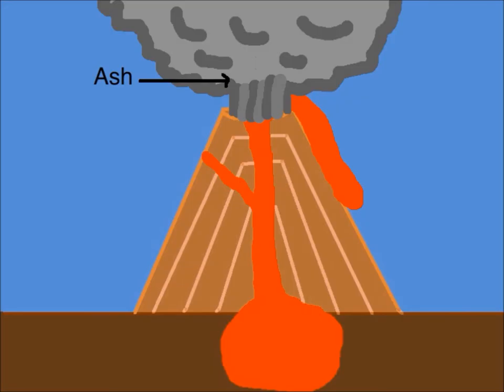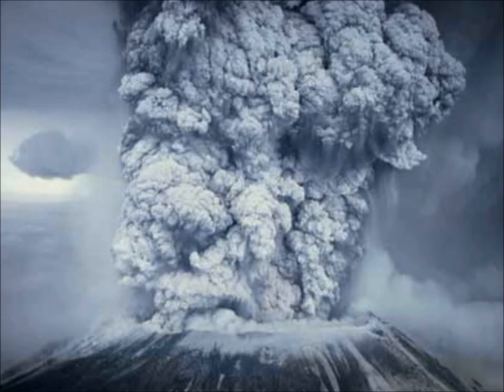Ash is very small fragments of lava and rock blasted into the air by volcanic explosions. Ash looks and feels like grains of sand and very fine ash is powdery. Here's a picture of a real volcano exploding ash.